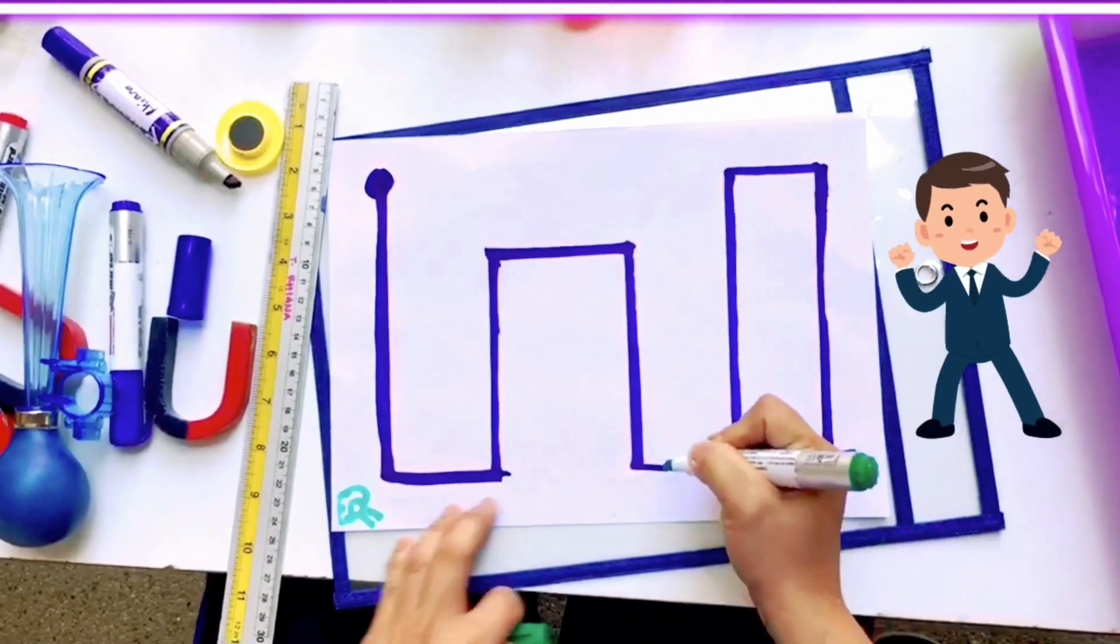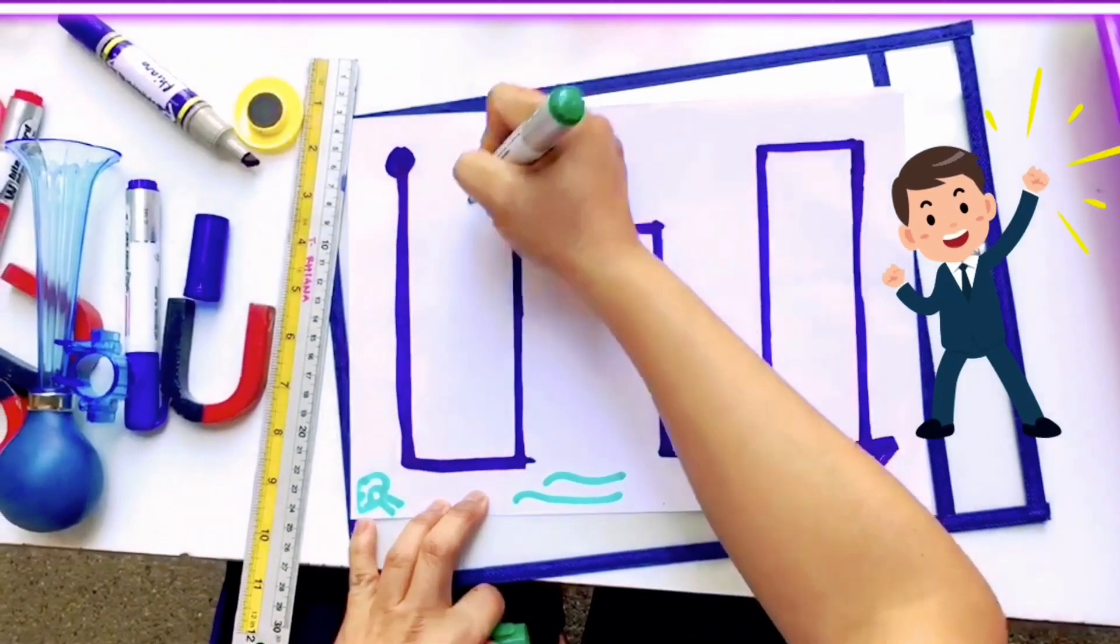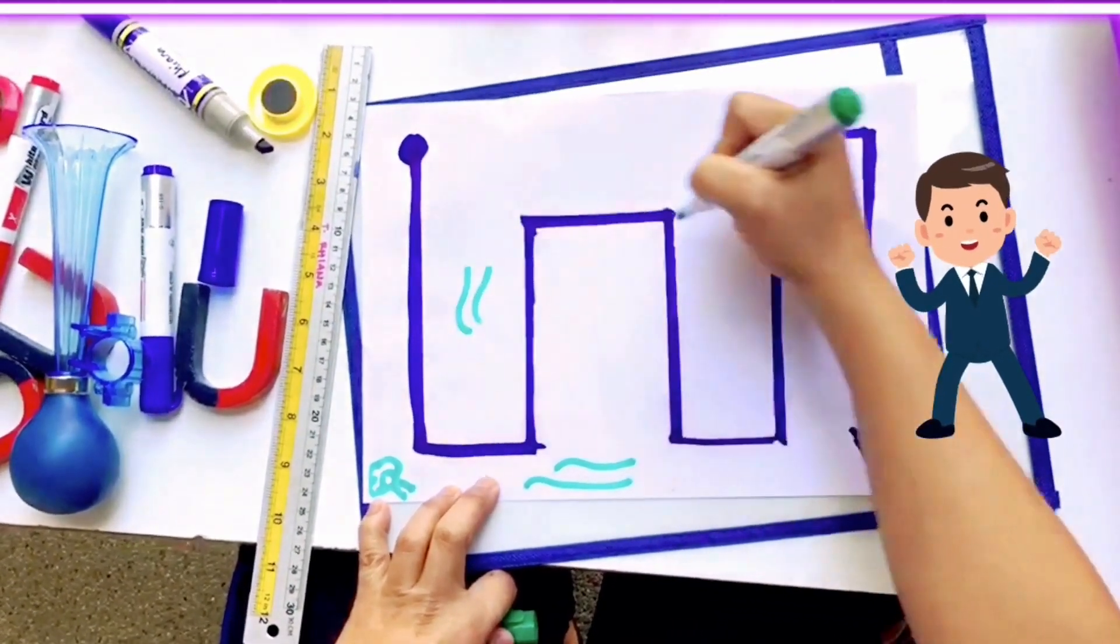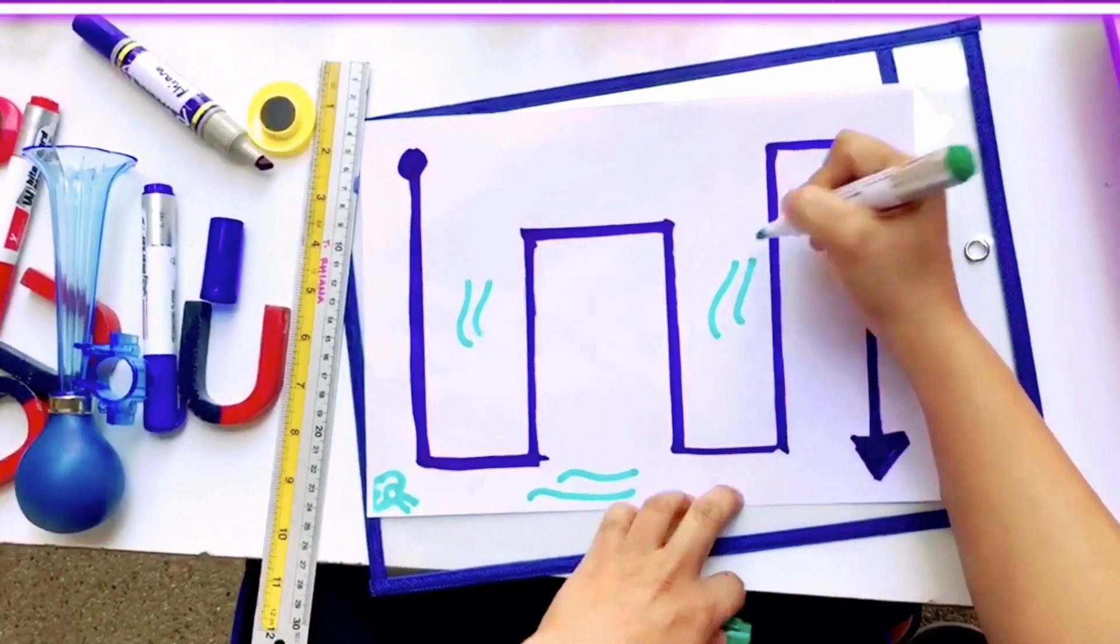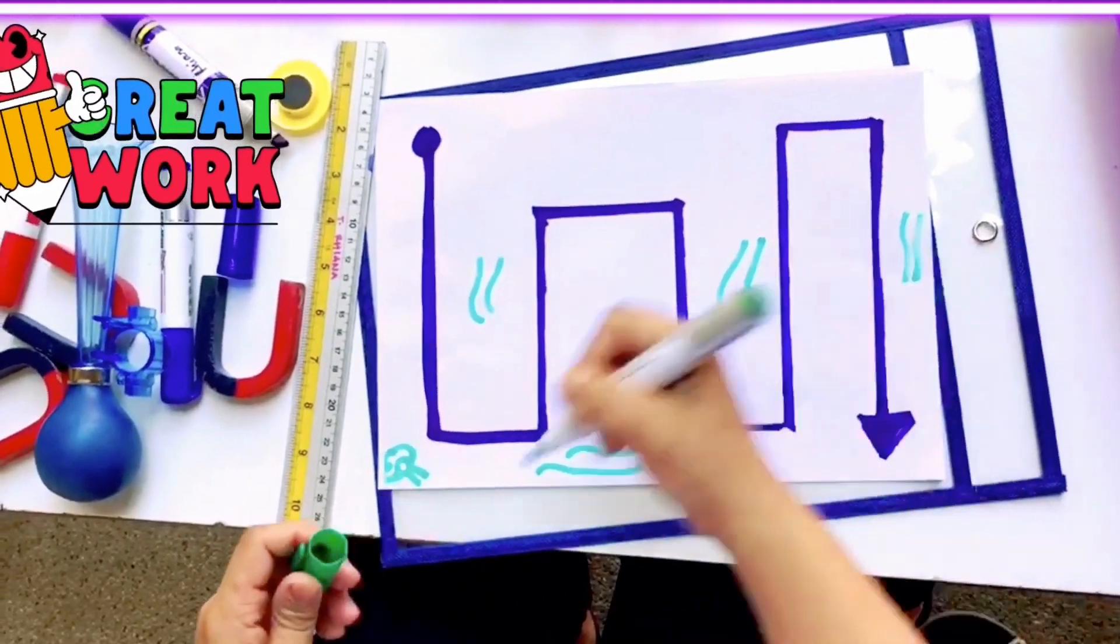We're going to make a tree here. We're going to make a line. Just to make it look pretty.